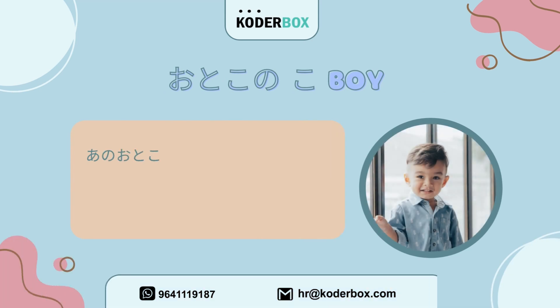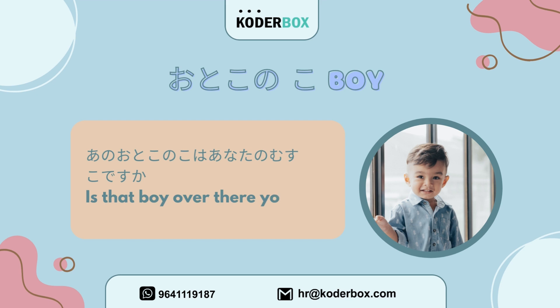Sixth, otoko no ko — Boy. Ano otoko no ko wa anata no musuko desu ka? Is that boy over there your son?